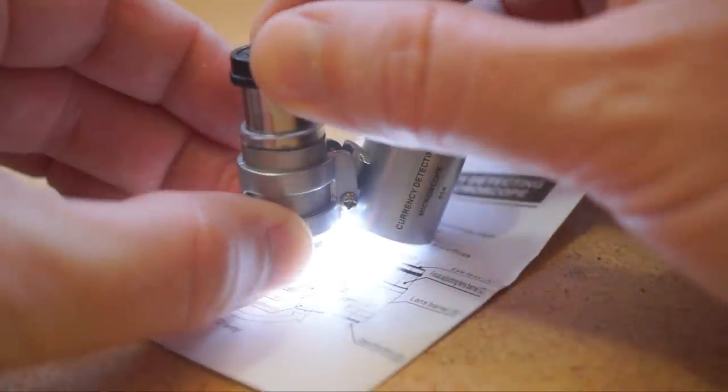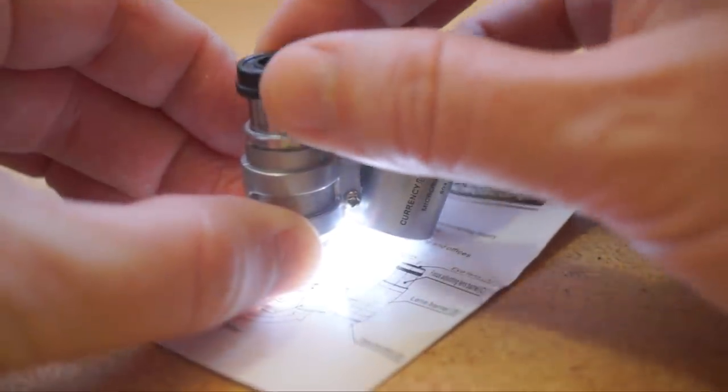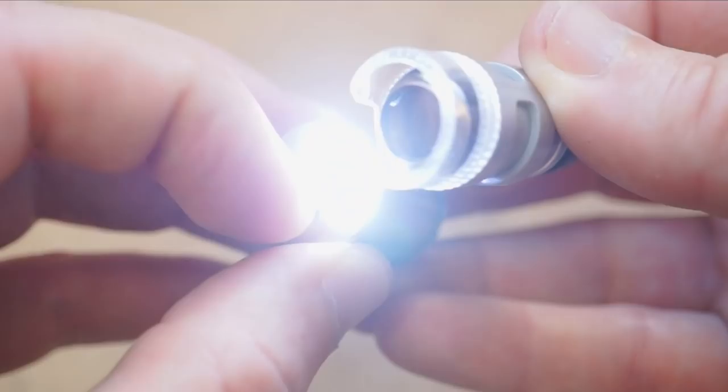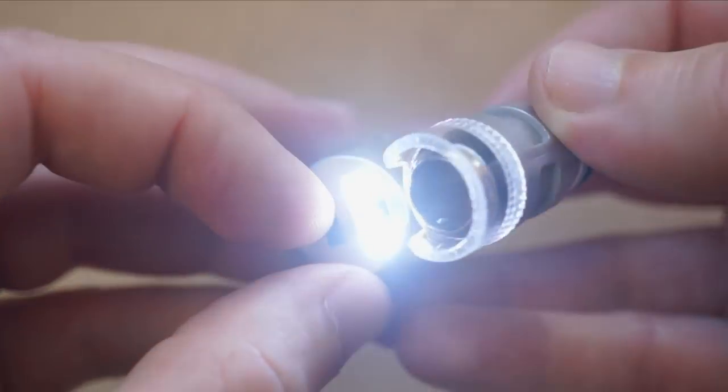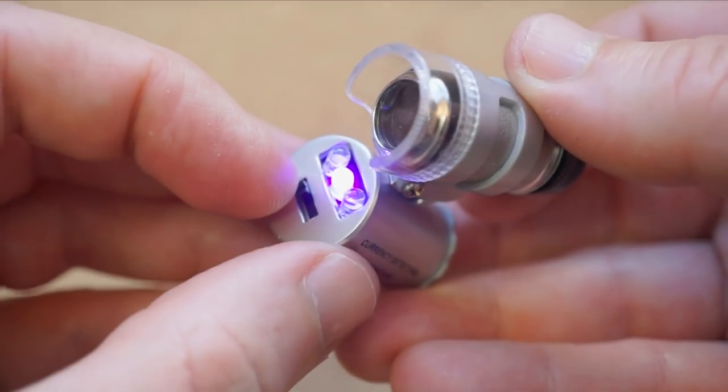The microscope itself is just this passive lens system that you can focus with your hand, but you also get this series of LEDs that you can switch on to add extra light. Switch one way, you can look at things under a UV light, which is apparently handy for seeing anti-counterfeit marks on money.